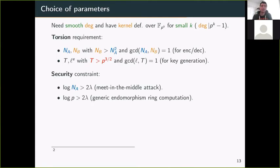In terms of security, we need Na to be quite big to avoid meet-in-the-middle attacks, and p to be big to avoid generic endomorphism ring computation. From the torsion requirement above, with those two constraints, this also gives us a bound on the values of Nb and the size of Nb and T. Here's what we need to know about the parameters.